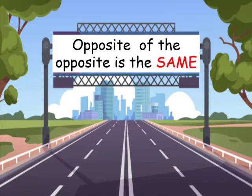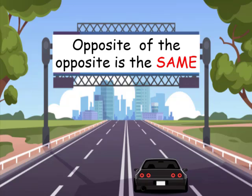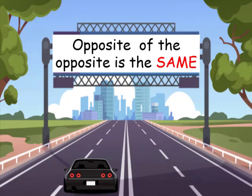The opposite of the opposite is the same. What this means is in the United States, we drive on the right side of the road. But in Japan, they drive on the left side. That's the opposite side.